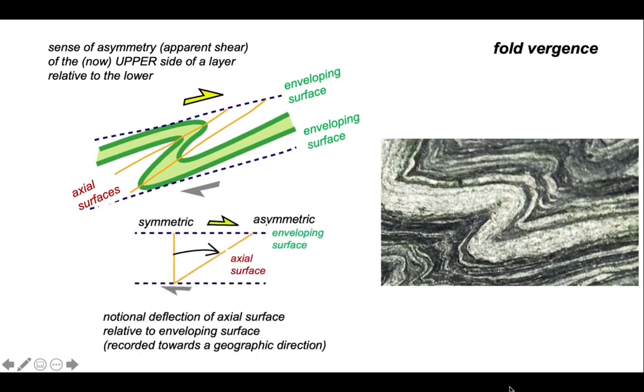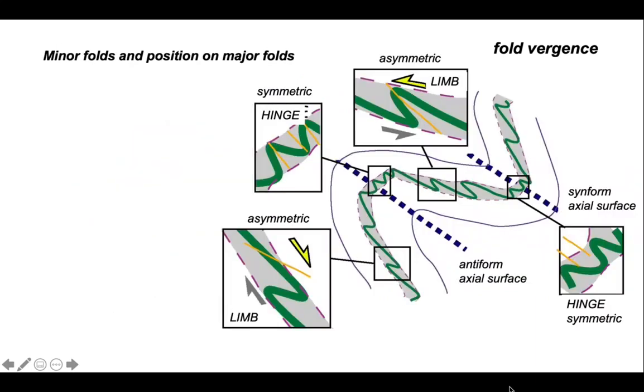Again, the way it works, we have a notional deflection of the axial surface towards the enveloping surface. You record the vergence towards a geographic direction. In this case, our geography is left and right, so the shear sense here is towards the right. The vergence of the folds is towards the right, both in the photograph and in our sketches.